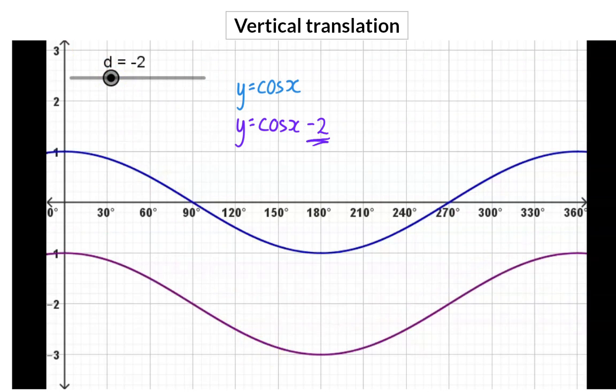In the previous video, we saw that the constant value in front indicates the amplitude of the graph. And here we can see that that is still true because the distance between our maximum and minimum value is two.